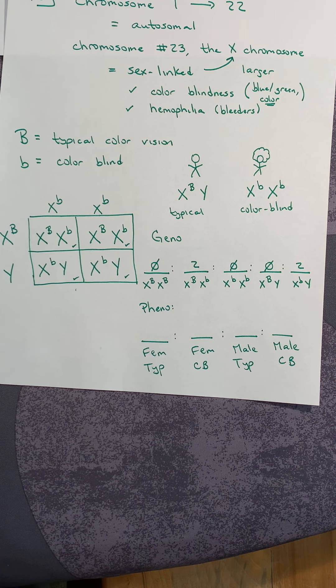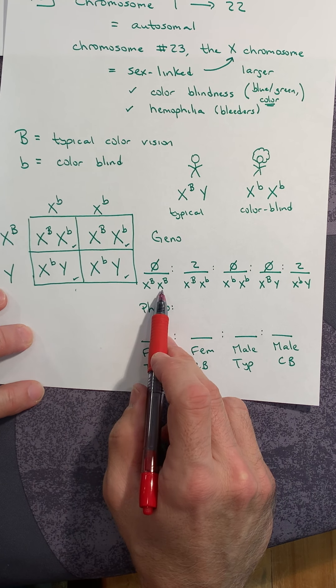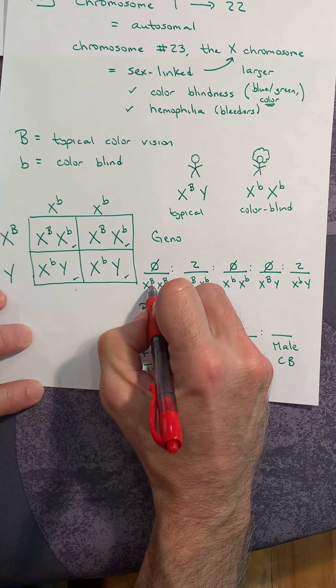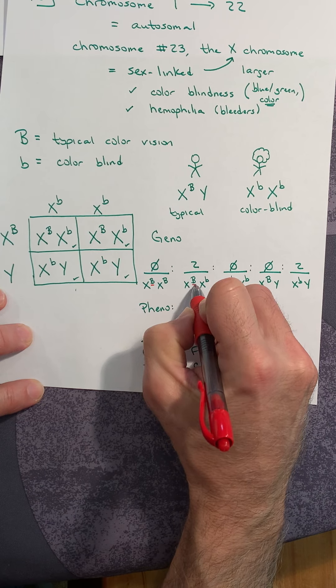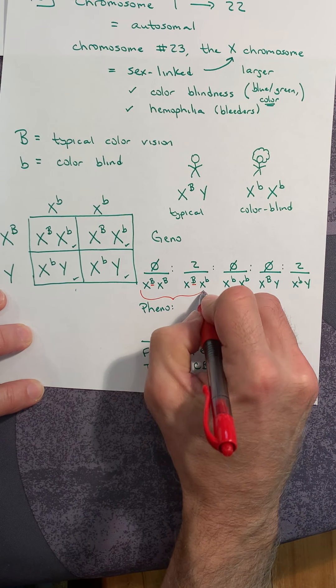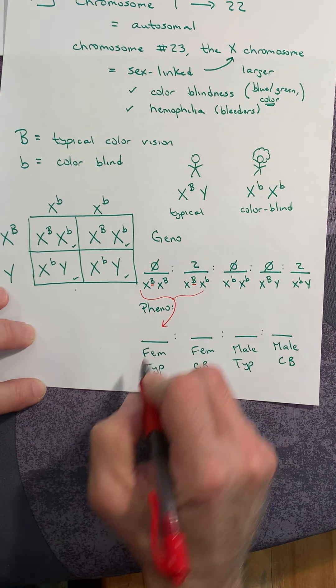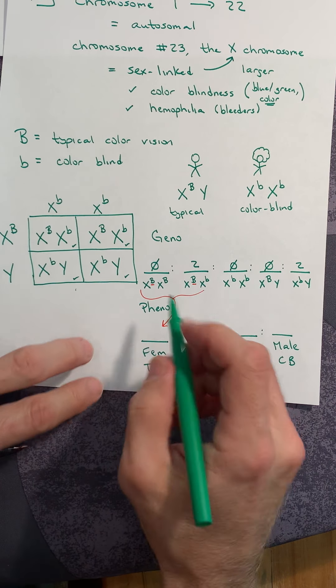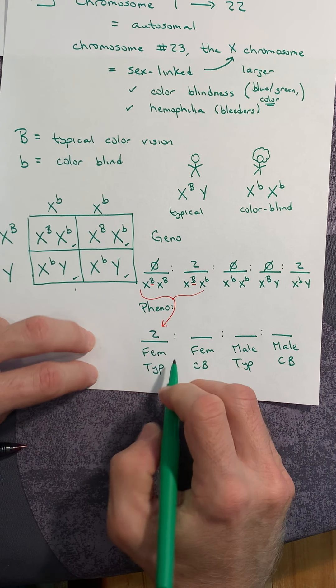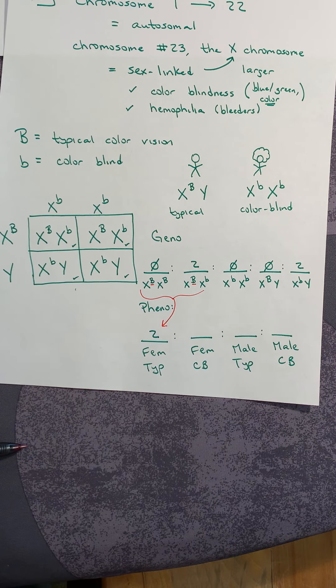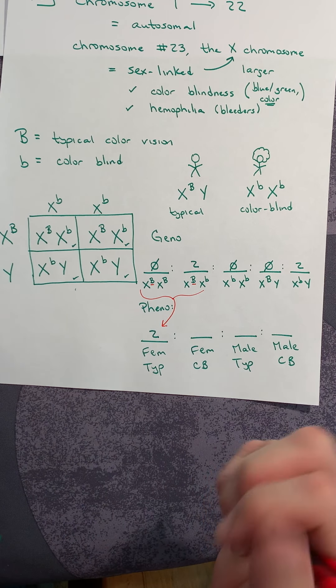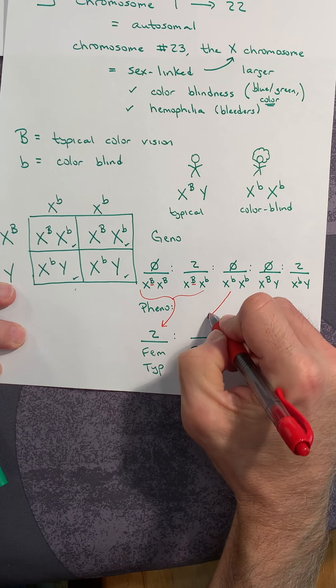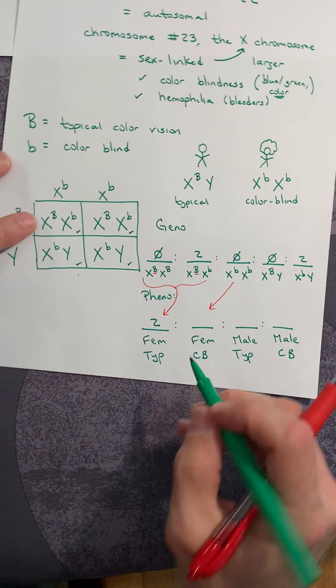These two females, even though they have a different genotype, since they both carry and express the big B, both have typical vision. This female here is colorblind, but we don't have any of those.